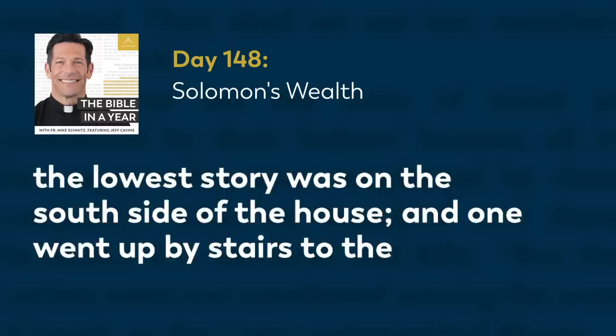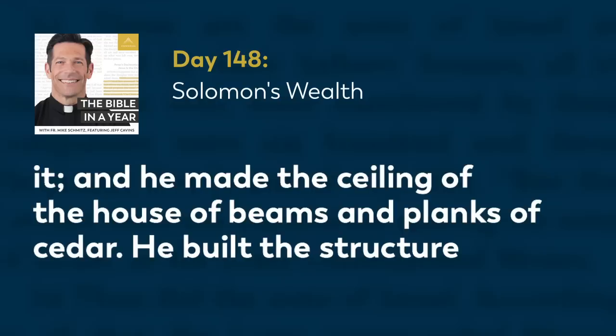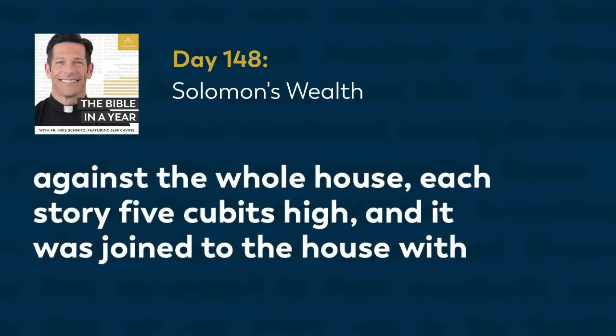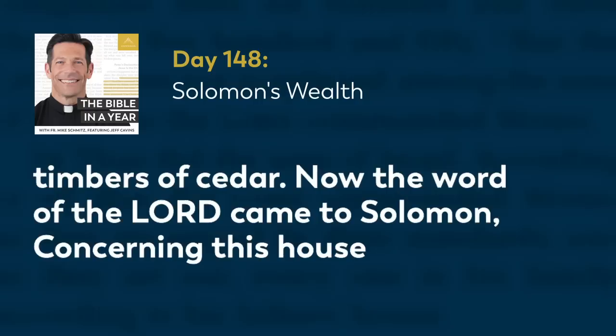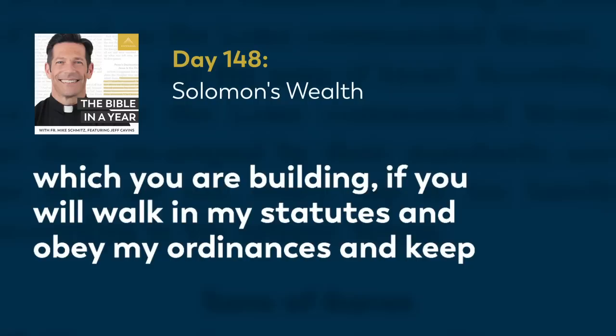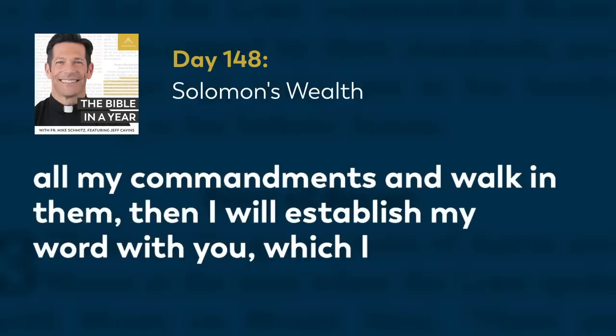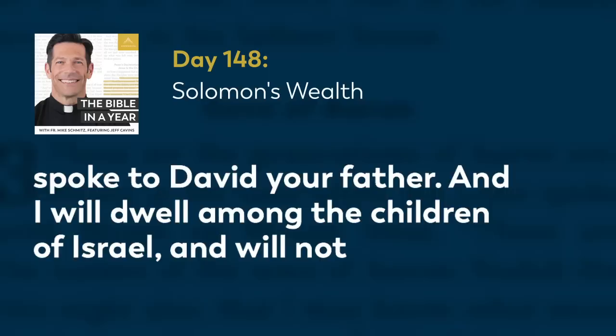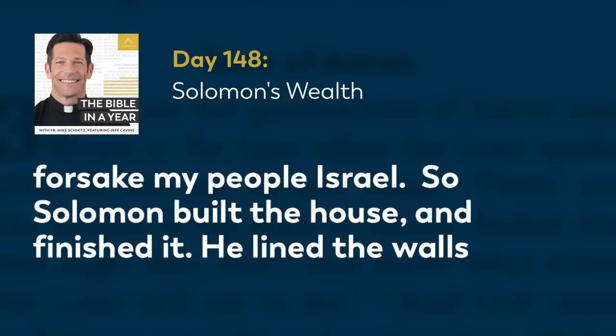The entrance for the lowest story was on the south side of the house, and one went up by stairs to the middle story, and from the middle story to the third. So he built the house and finished it, and he made the ceiling of the house of beams and planks of cedar. He built the structure against the whole house, each story 5 cubits high, and it was joined to the house with timbers of cedar. Now the word of the Lord came to Solomon: 'Concerning this house which you are building, if you will walk in my statutes and obey my ordinances and keep all my commandments and walk in them, then I will establish my word with you which I spoke to David your father, and I will dwell among the children of Israel and will not forsake my people Israel.' So Solomon built the house and finished it.